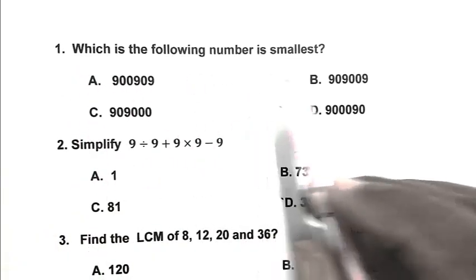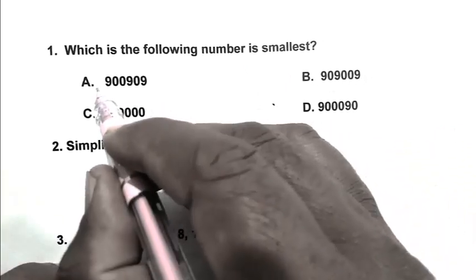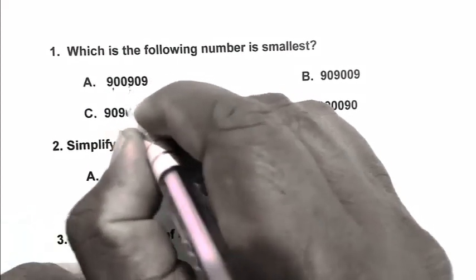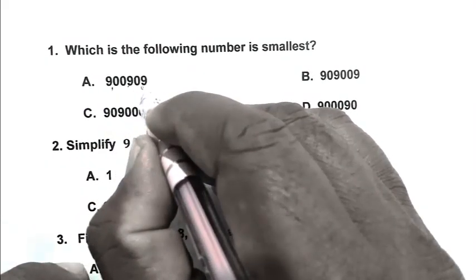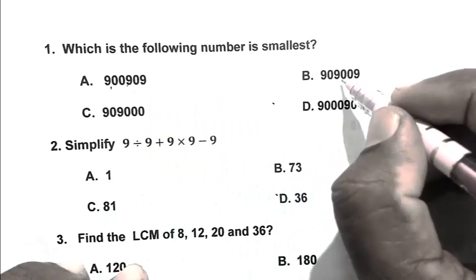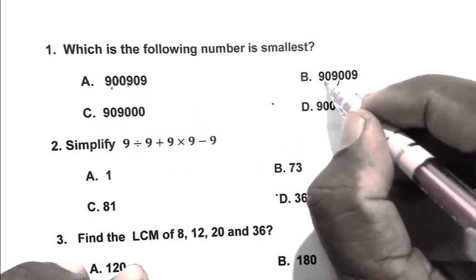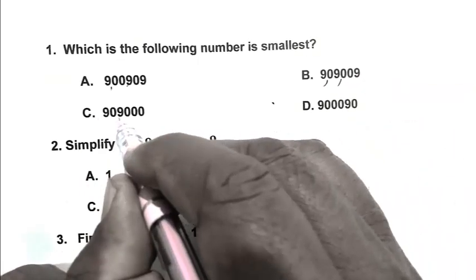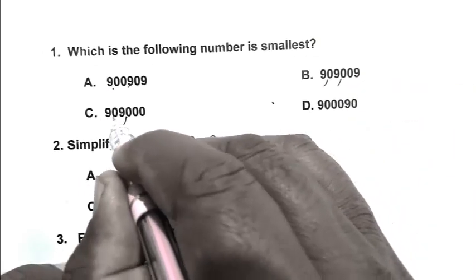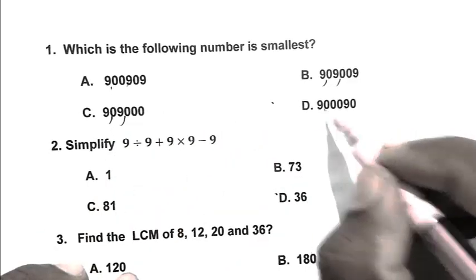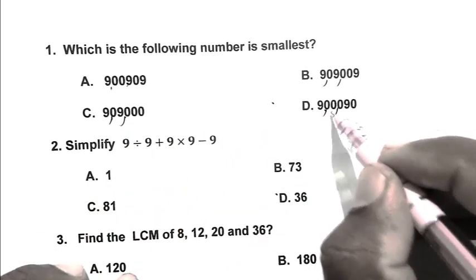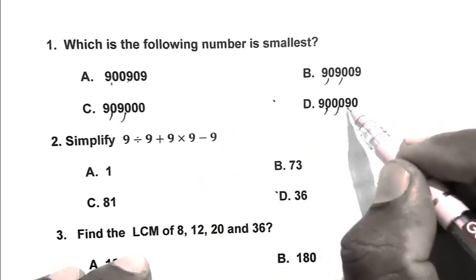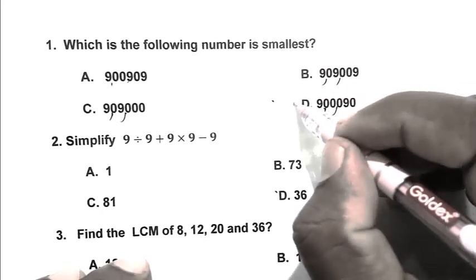Which of the following numbers is smallest? Option A: 9,909. Option B: 9,009. Option C: 9,009. Option D: 9,90,000. So friend, in option D, 9,90,000 is the smallest number. So D is the right answer.